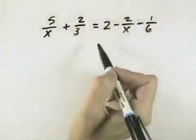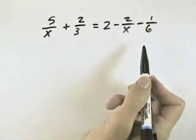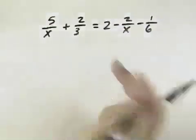Here we want to solve this rational equation. And so what we're going to do in this case is eliminate the fractions. The way we'll do that is to multiply through the entire equation by the least common denominator.